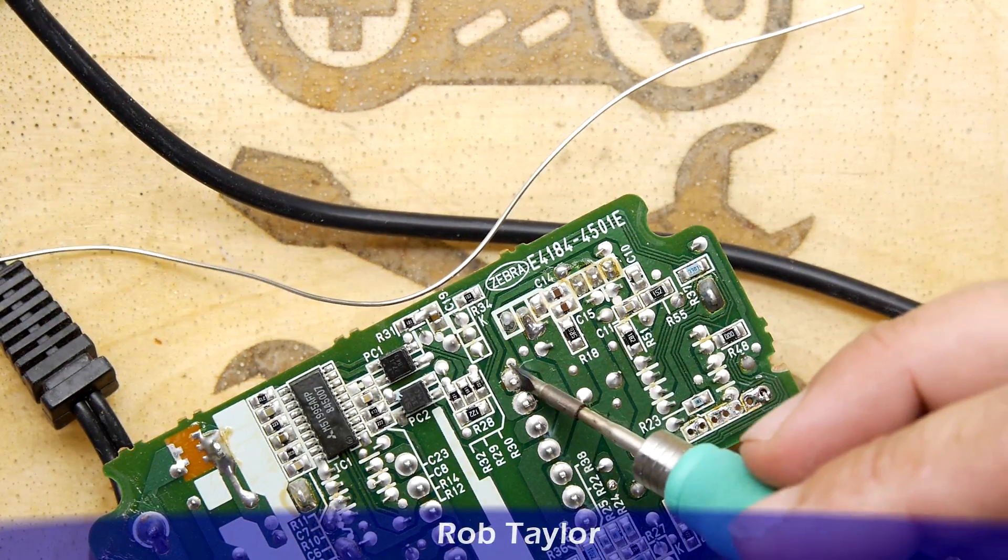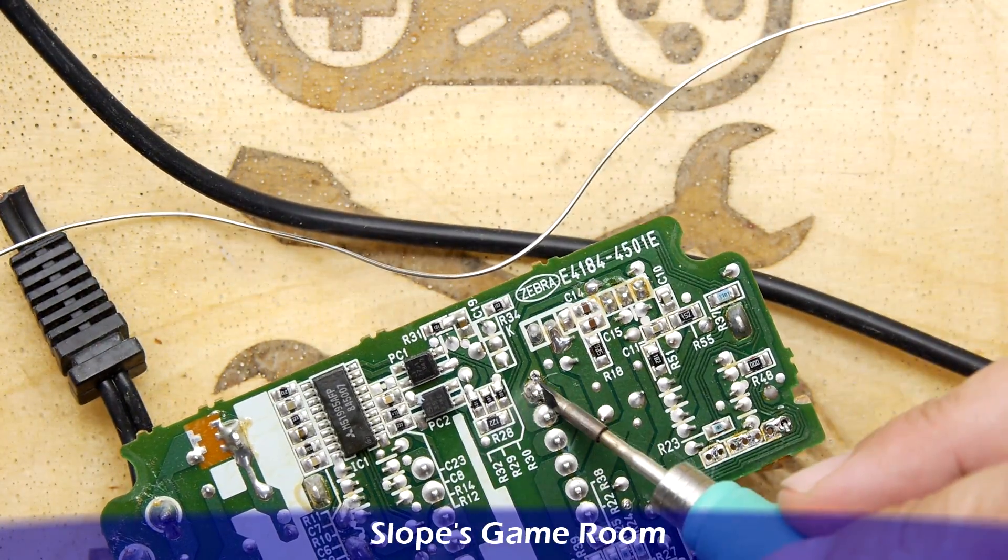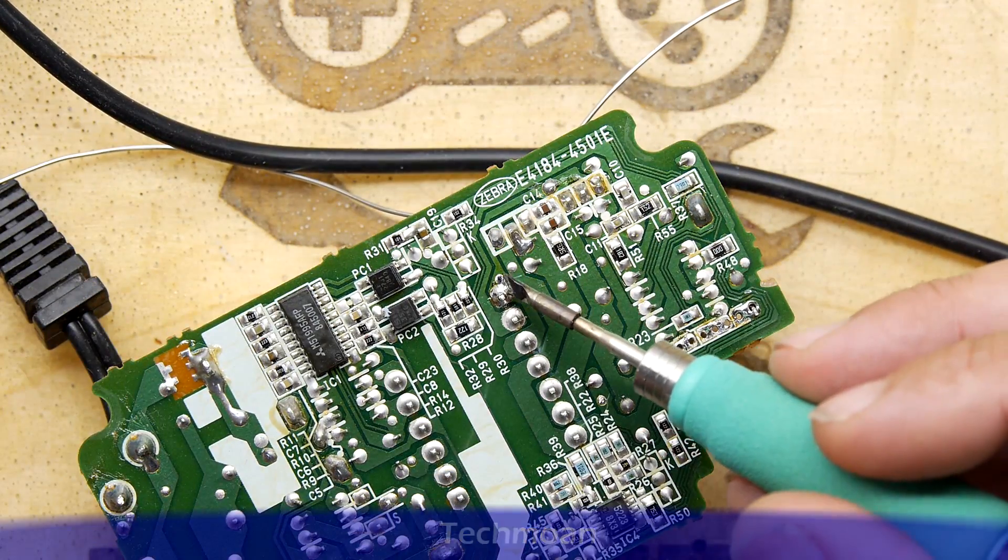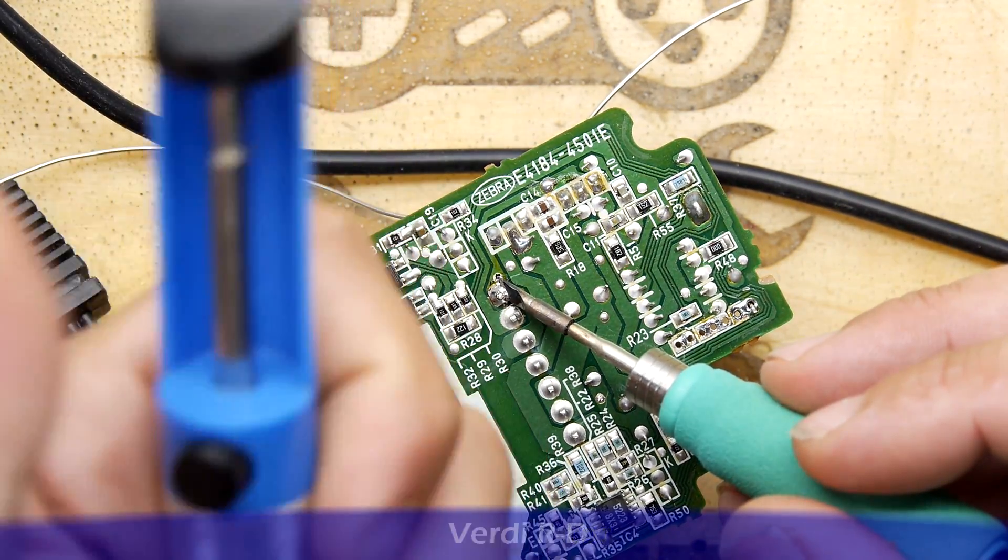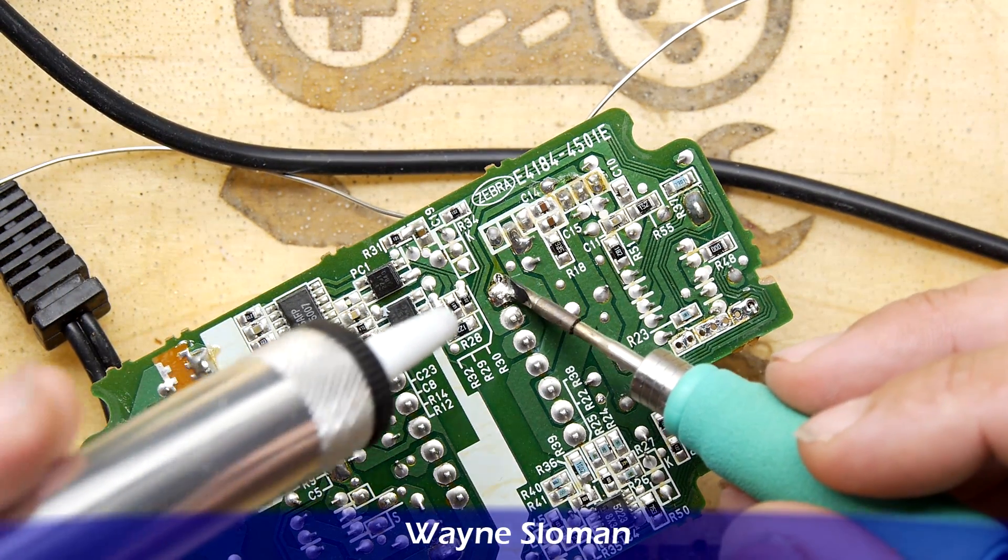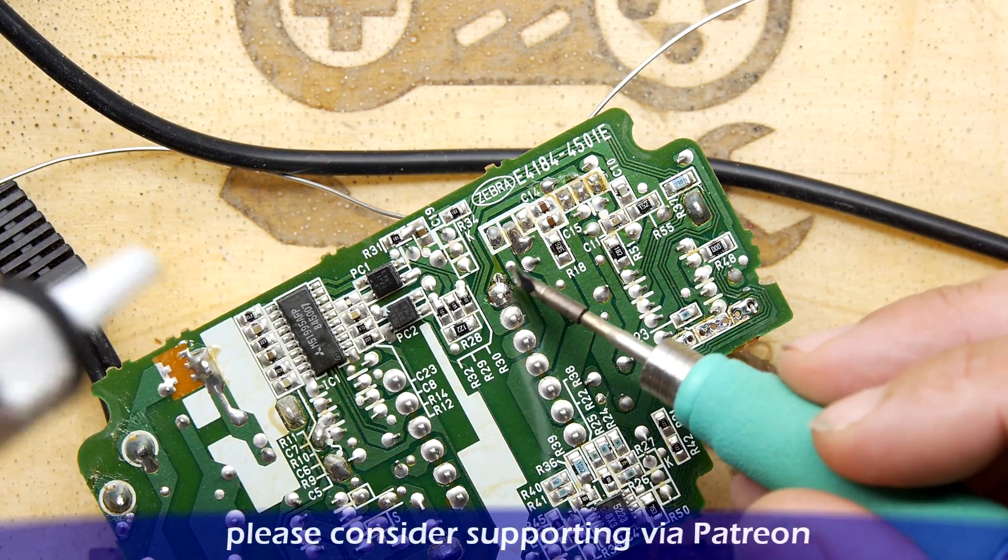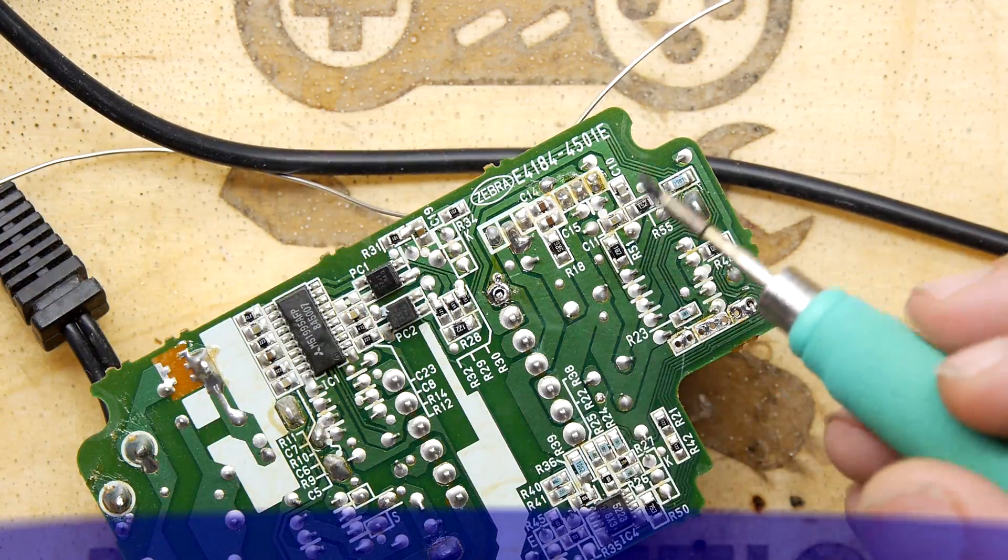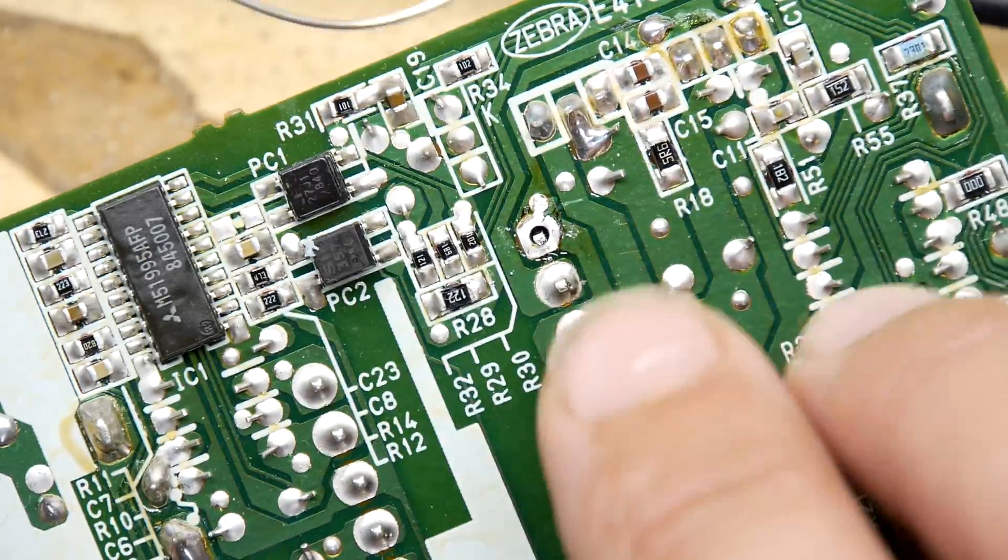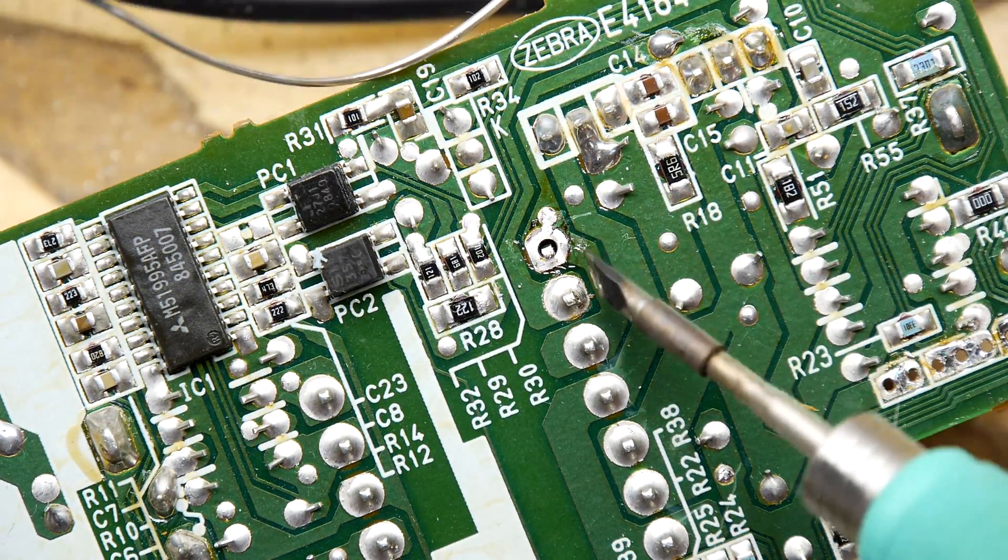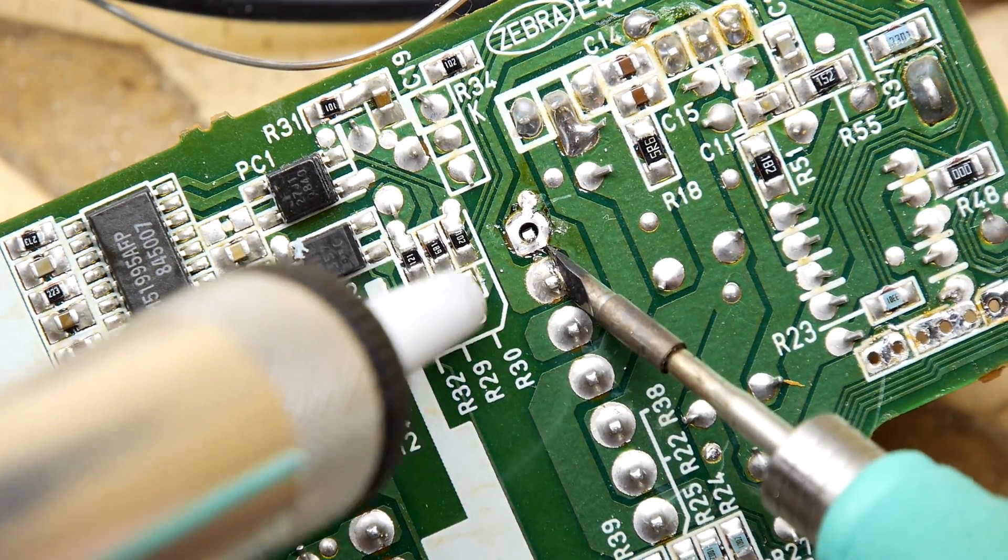You push the plunger down on the solder sucker—it's activated by that button—then you place it over the pin. You can see there, if we zoom in a bit more, how it sucked all that solder away.